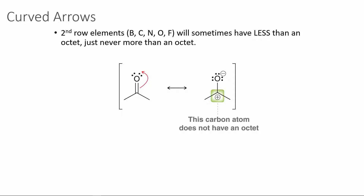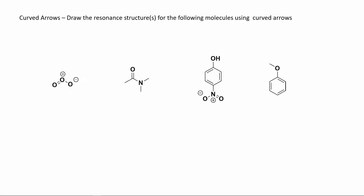More than an octet is not okay, but in some cases second-row elements can have less than a filled octet. For example, in a carbonyl group — a carbon-oxygen double bond — the electrons from the pi bond can move up to the oxygen, making the two electrons from the pi bond become a lone pair on the oxygen. This leads to an oxygen with a negative charge and a carbon with a positive charge. This is completely acceptable; the carbon doesn't have an octet, but the overall charge of the molecule remains neutral. Here are some problems to work through on the worksheet: draw all the resonance structures for these molecules.